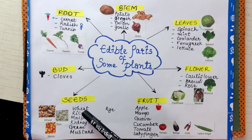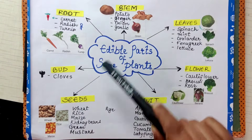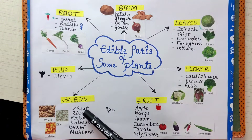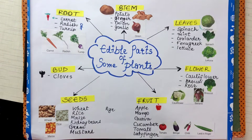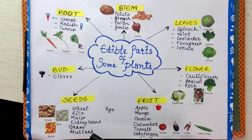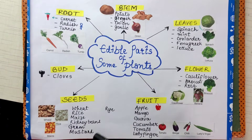Edible seeds which you are going to eat include wheat, rice, maize — the bhutta, kidney beans — the rajma, gram — chole, mustard, and rye. These are also included in spices.